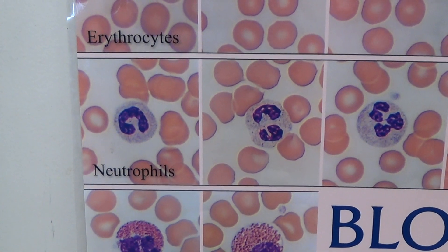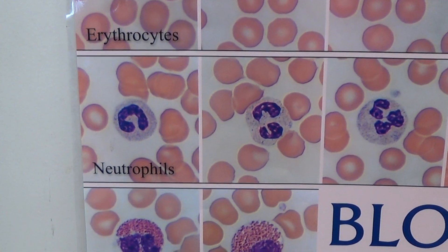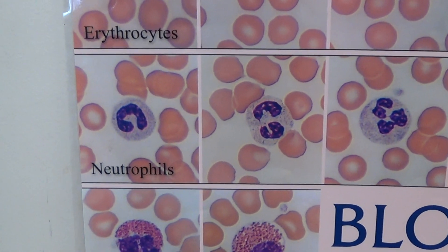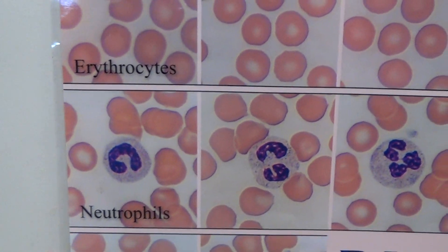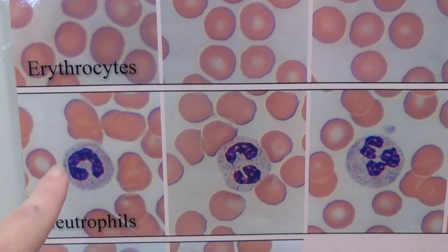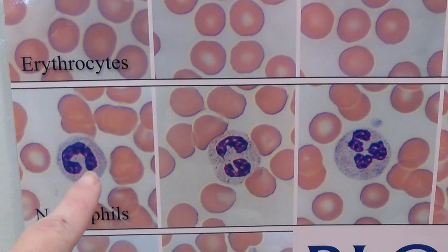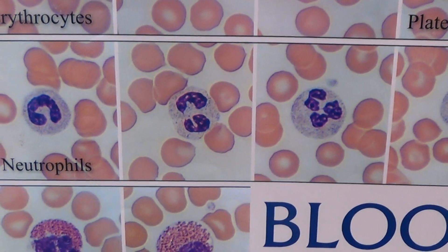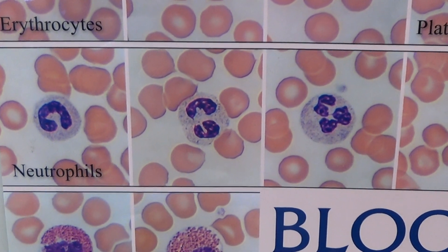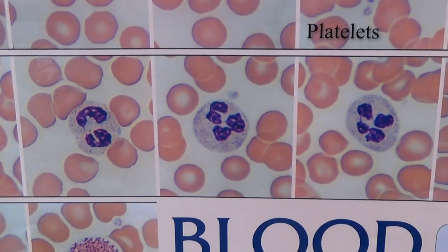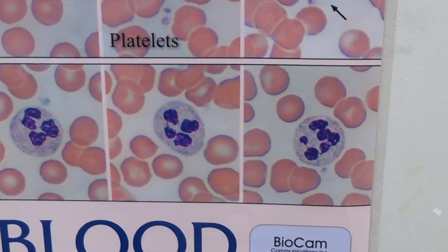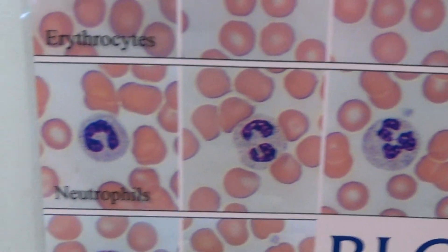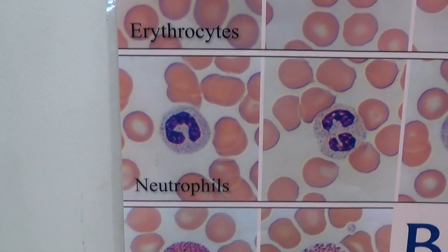Neutrophils are known for having a nucleus that can be polymorphic, meaning it can really change shape. This one has the nucleus all together in a C-shape, but it's still relatively thin. Next to that we have a nucleus in two parts, kind of like that C broken in half — here in three, here in four, and maybe even more on this one. So all of these are different examples of neutrophils.